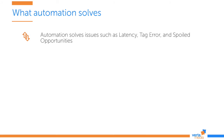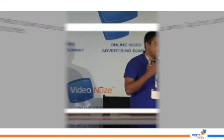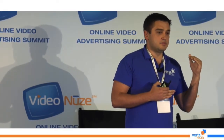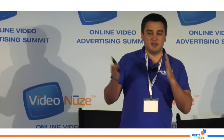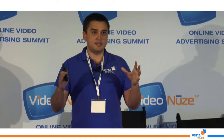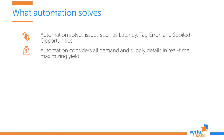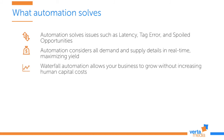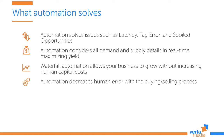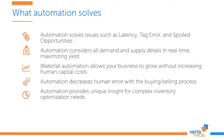What does automation solve? First, it addresses latency — for each domain we can automatically optimize timing. AdOps just sets a few parameters like maximum latency, number of errors, and number of demand sources, and the system does everything else. It considers all demand and supply details in real time and can update the waterfall every minute, five minutes, or every hour depending on settings. Of course, automation also decreases human errors and the cost of the buying and selling process.